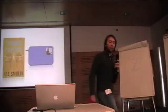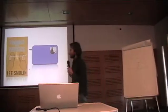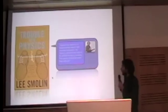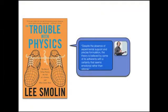I'm a bit disappointed that Lee Smolin didn't tell that, because this talk was prompted by a claim that he made in his book The Trouble with Physics. Multiple claims that he made in that book. The main one is this: despite the absence of experimental support and a precise formulation, a theory is believed by some of its adherents with a certainty that seems emotional rather than rational.